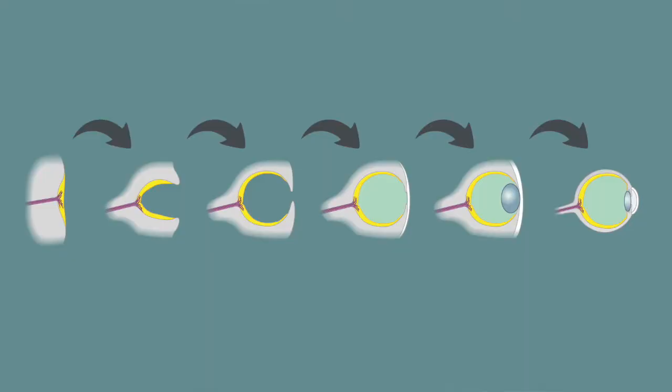Let's say you're interested in studying the evolution of a complex feature, like eyes. Eyes can't evolve from a single mutation — it takes multiple steps occurring in the right order for that particular complex feature to evolve. So how do you study the order that those steps occurred in?